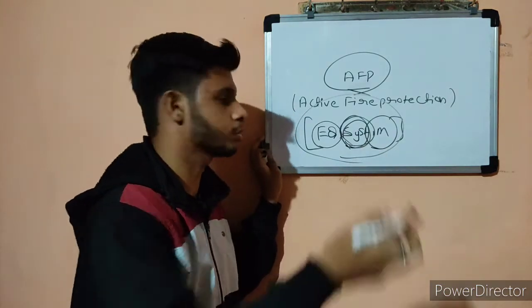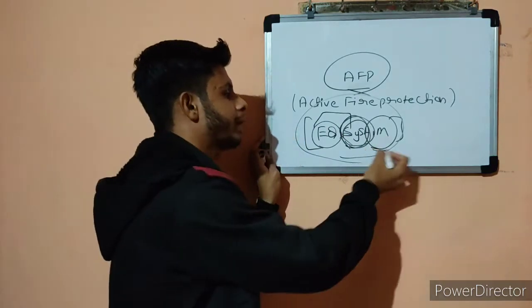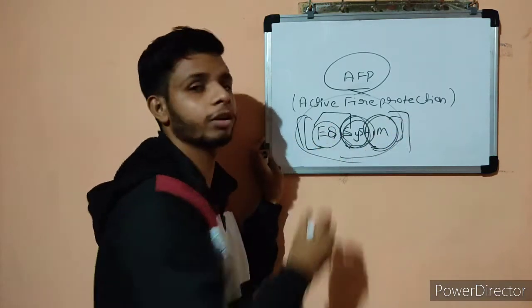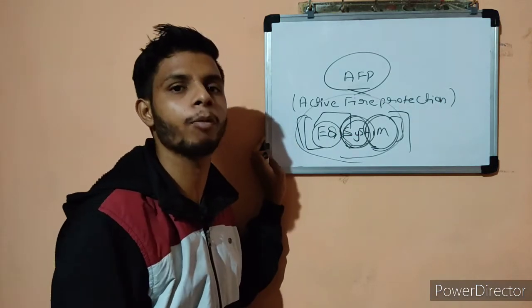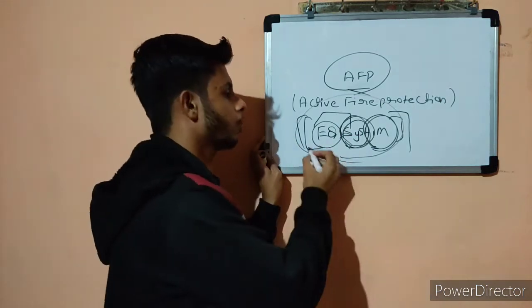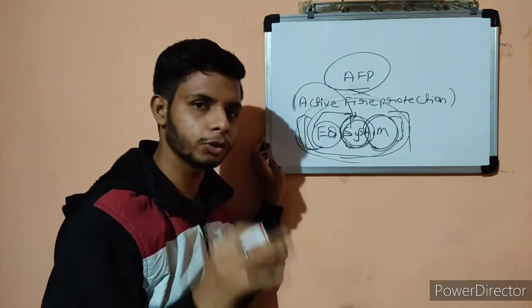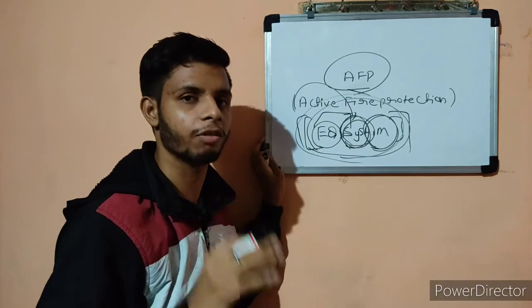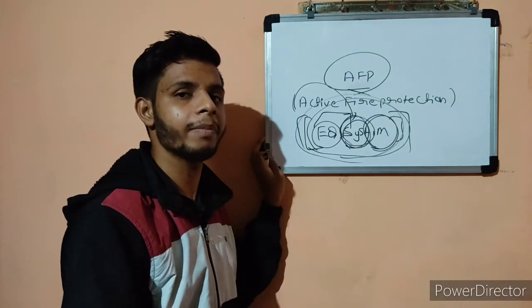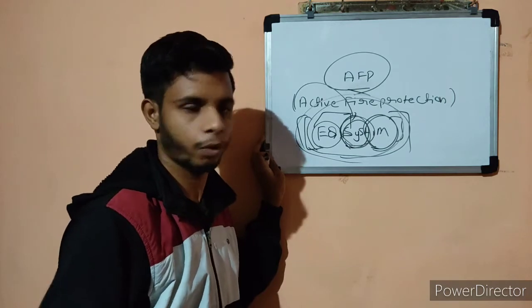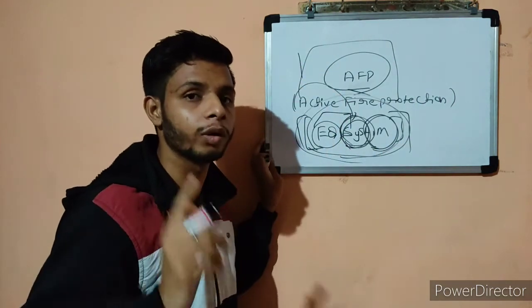The third component is methods — how to operate these systems. Some systems are automatic and some are manual, so we need proper methods. If we do not operate them properly, the fire will not be extinguished. So Active Fire Protection is a combination of all three, and its purpose is simple: once fire starts, extinguish it in the minimum duration of time.